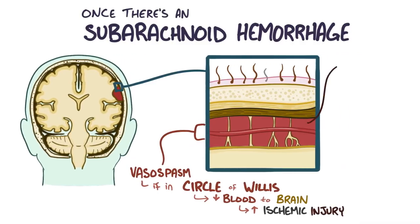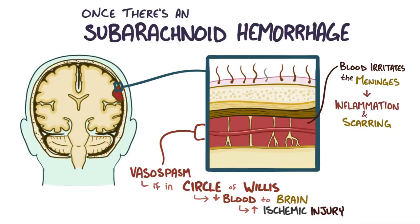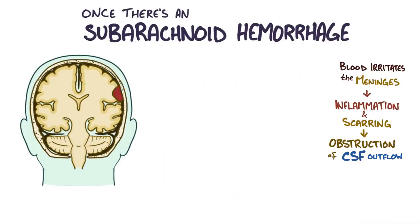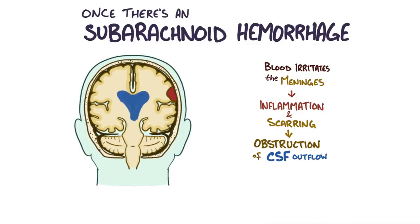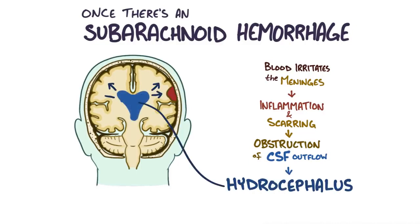Over time, blood in the subarachnoid space can irritate the meninges and cause inflammation, which leads to scarring of the surrounding tissue. The scarring tissue can obstruct the normal outflow of cerebrospinal fluid, causing that fluid to build up and dilating the ventricles at the center of the brain — referred to as hydrocephalus. As the ventricles dilate, there is also increased intracranial pressure, which compresses the brain tissue.